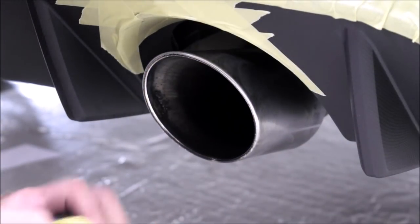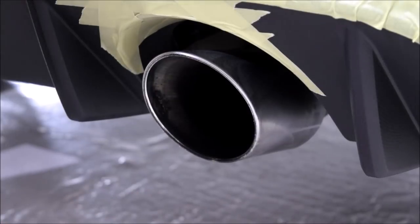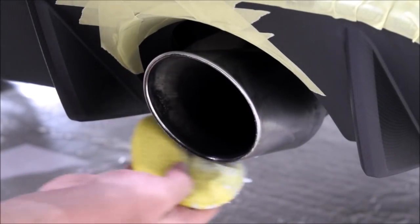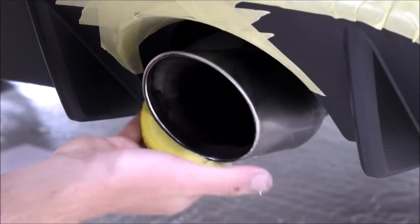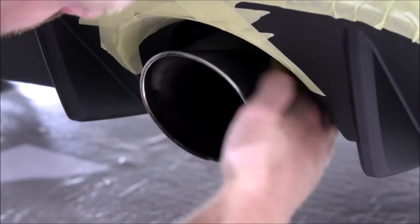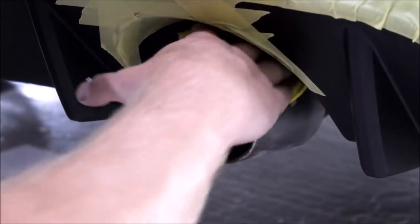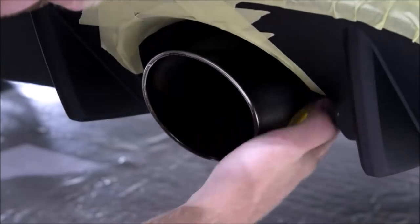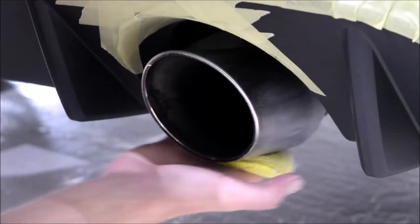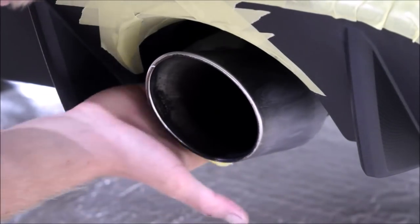When you start using wire wool on stainless steel exhaust tips they have a tendency to leave slight swirl marks and haziness to the finish, which would then need a microfiber applicator stage to fully restore the gloss level. Hence why you should always start with the finest polish and pad combination first, before upping the abrasion level if required.